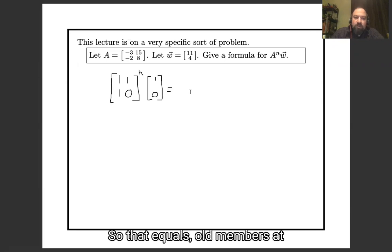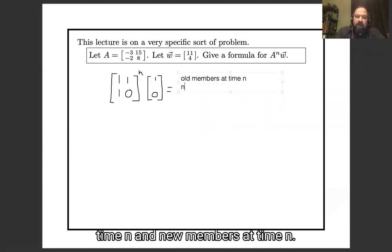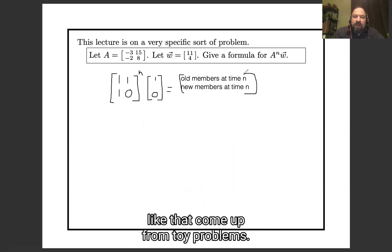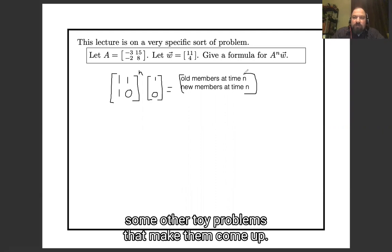So that equaled old members at time n and new members at time n. We've seen formulas like that come up from toy problems, and in your textbook you'll see some other toy problems that make them come up.